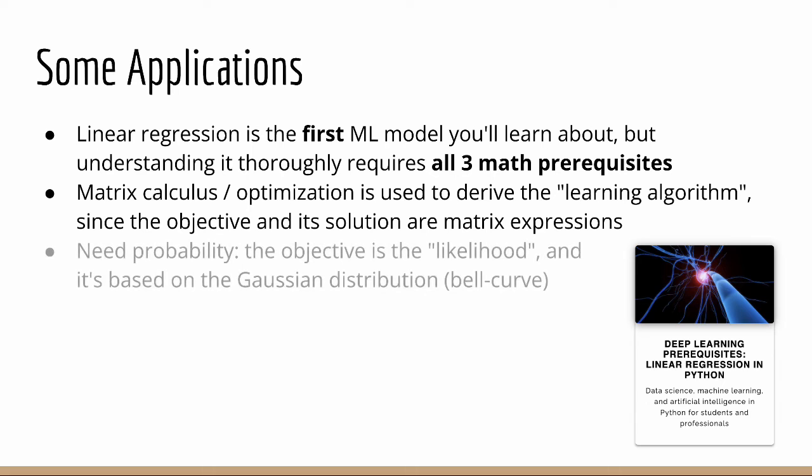Furthermore, we also need probability because the objective function is a quantity known as the likelihood, which is a probabilistic quantity based on a probability distribution known as the Gaussian, or normal distribution. You may recall that this is a function shaped like the famous bell curve. So that's just your first machine learning model, and it already depends on all three math prerequisites.